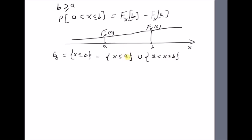From the graph, the region x less than or equal to b can be split into two regions: x less than or equal to a, and the interval a to b. By definition, the first is event A and the second is event A_b. So this is the union of event A and event A_b.